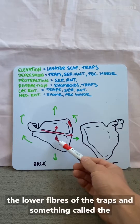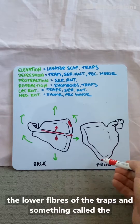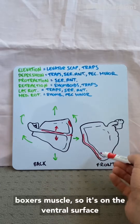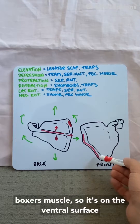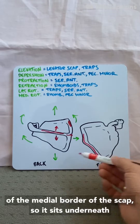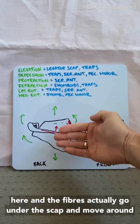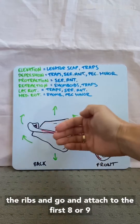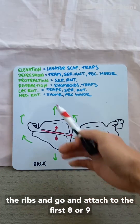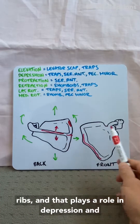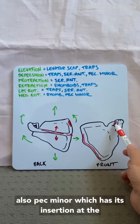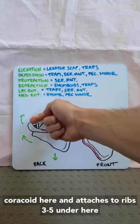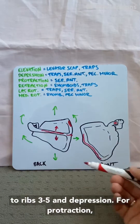For depression, it's going to be the lower fibers of the traps and something called the serratus anterior, which is what we call the boxer's muscle. It sits on the ventral surface of the medial border of the scapula — underneath here — and the fibers actually go under the scap, move around the ribs, and attach to the first eight or nine ribs. That plays a role in depression. Also pec minor, which has its insertion at the coracoid here and attaches to ribs three to five, plays a role in depression.